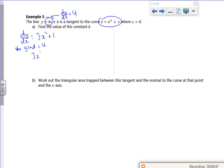So if I put 3x² + 1 = 4, what have I got there then? 3x² is 3, x² is 1, x is plus or minus 1. Oh yeah, nice.